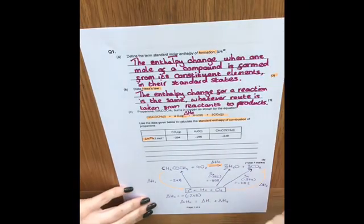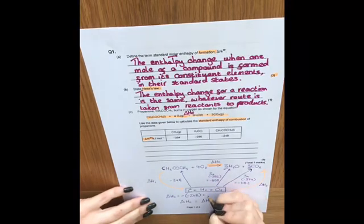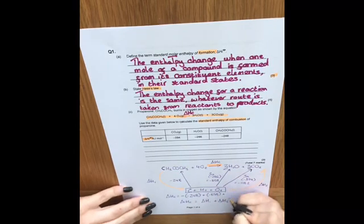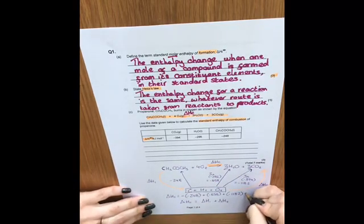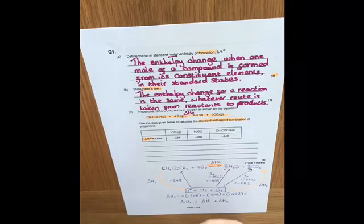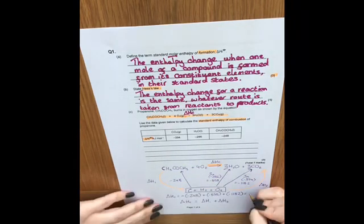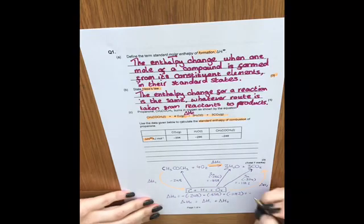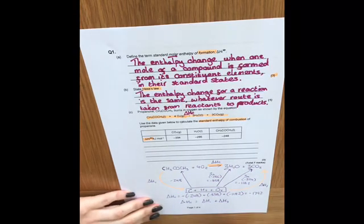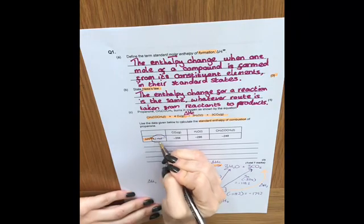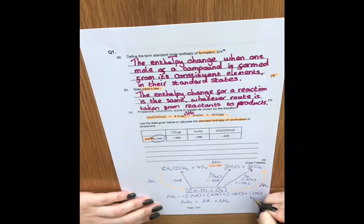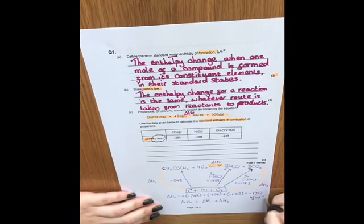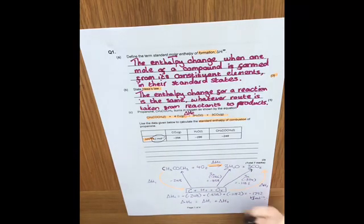Now Δh2, we're going with the arrows, so they just stay as they are. So add -858 and add -1182. Again, when you put it into a calculator, just be really careful making sure you're getting your signs correct. But if you put that all into your calculator, you should get -1792. And then obviously if we look here, we can see that our unit is kilojoules per mole, and that answer would get you all three marks.